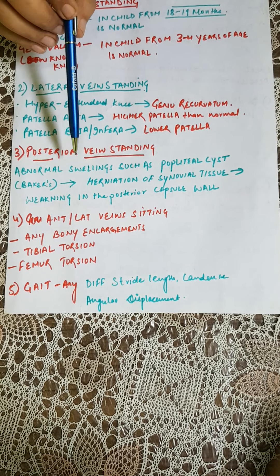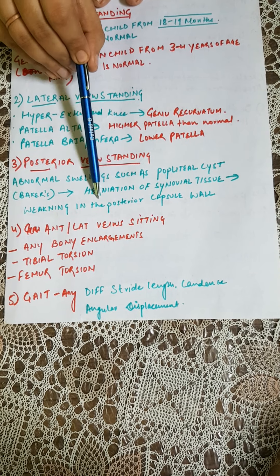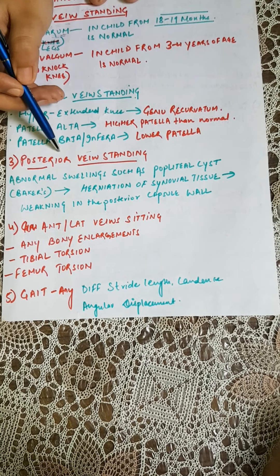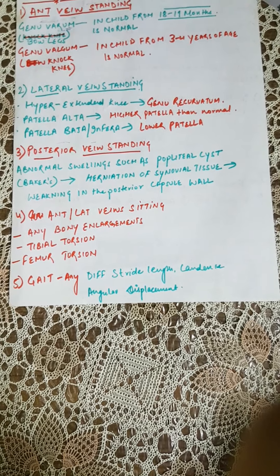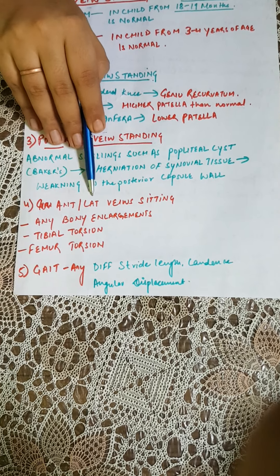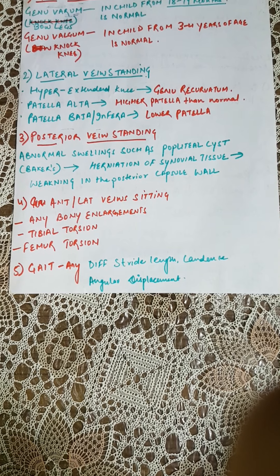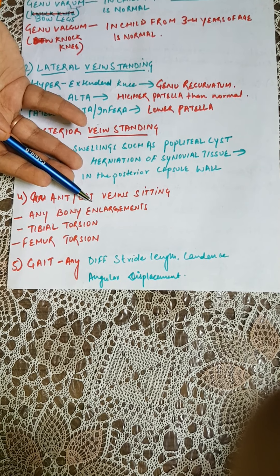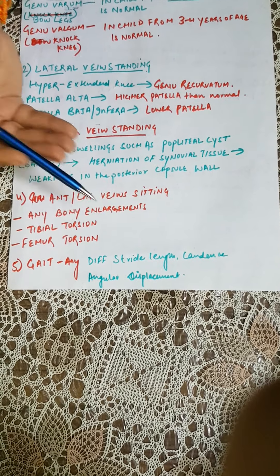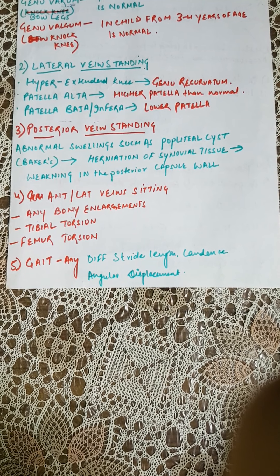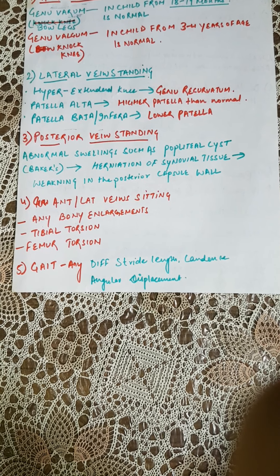The third view is the posterior view standing, where the examiner looks for abnormal swelling such as a popliteal cyst, also known as baker's cyst, which occurs due to herniation of synovial tissue from weakening in the posterior capsule wall. The fourth view is the posterolateral view in sitting, which checks for bony enlargements, tibial torsion, and femoral torsion, assessing whether excessive torsion is influencing any condition.